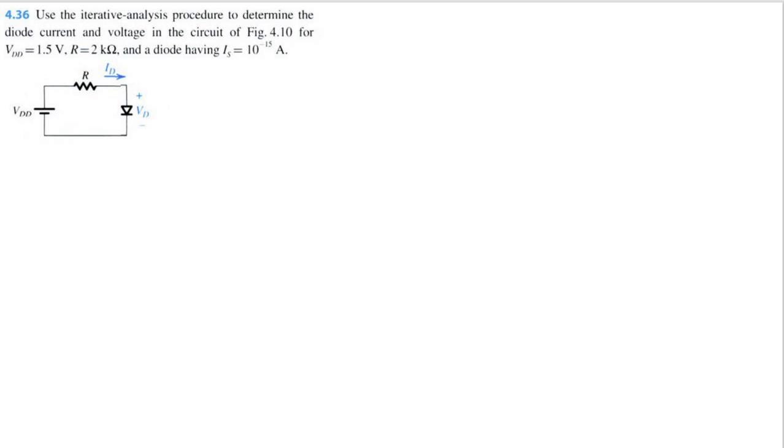So what is the iterative analysis? Well, it mainly uses the following two equations. ID equals VDD minus VD divided by R, using Kirchhoff's voltage law, and VD equals VT times the natural log of ID divided by IS, the saturation current, where VT is equal to 25 millivolts or 0.025 volts.